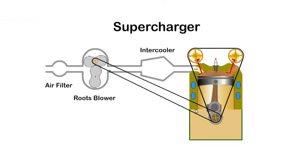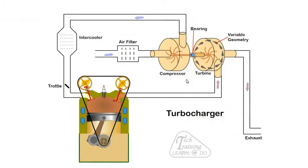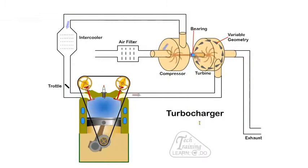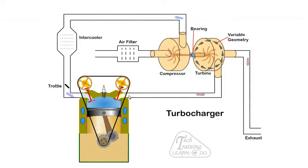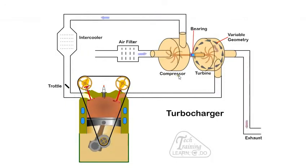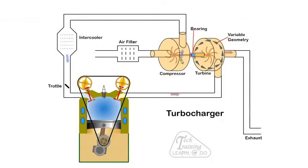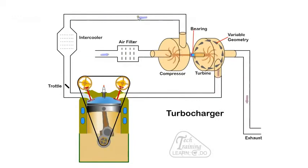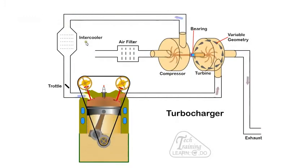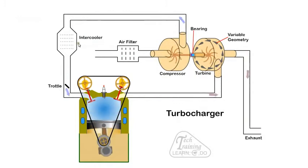A better option is to use a turbocharger which is driven by the waste exhaust gas. A turbocharger uses the energy in the waste gases exiting from the cylinder to spin a turbine which drives a compressor mounted on the same shaft. The compressor draws clean air in through a filter and compresses it. Unfortunately compressing air also heats it resulting in expansion. It's best if this air is cooled with an intercooler before entering the engine.